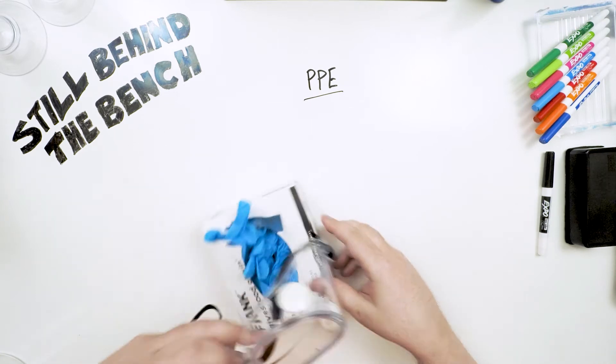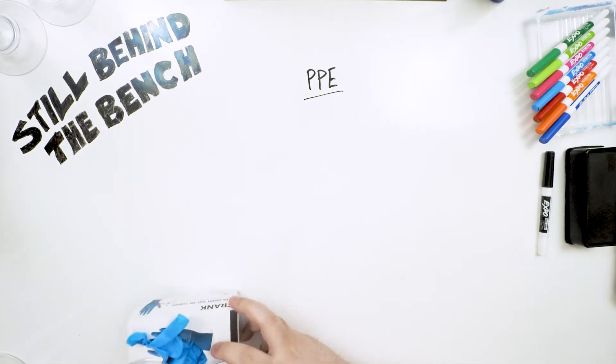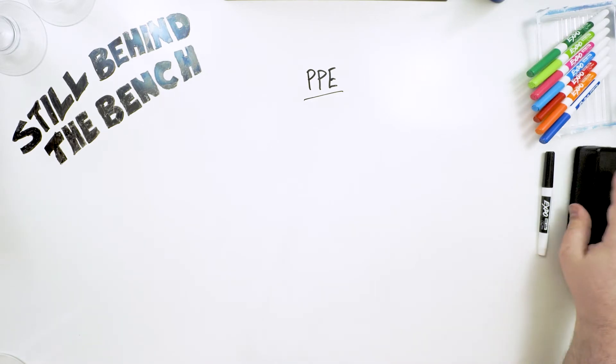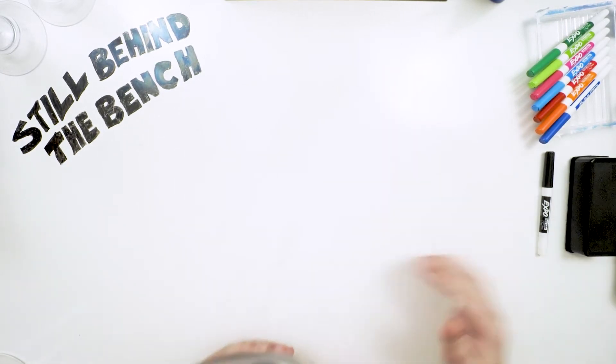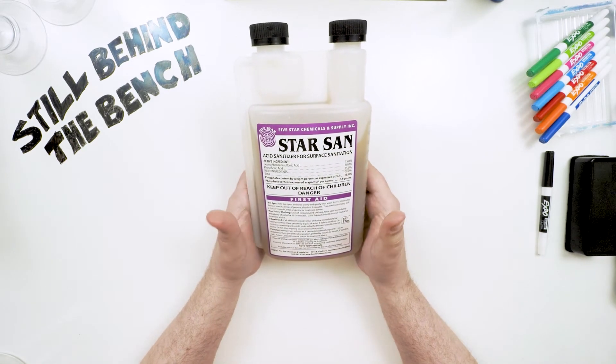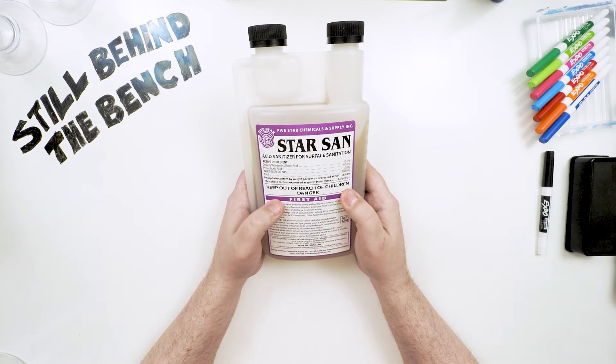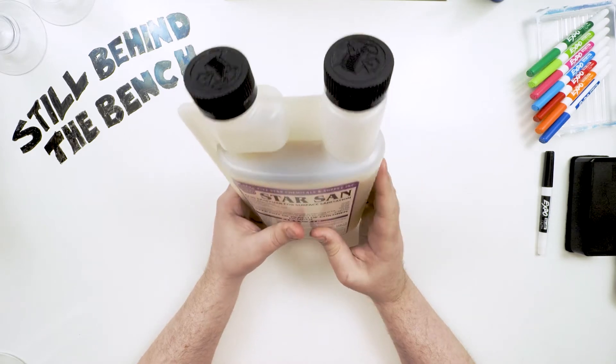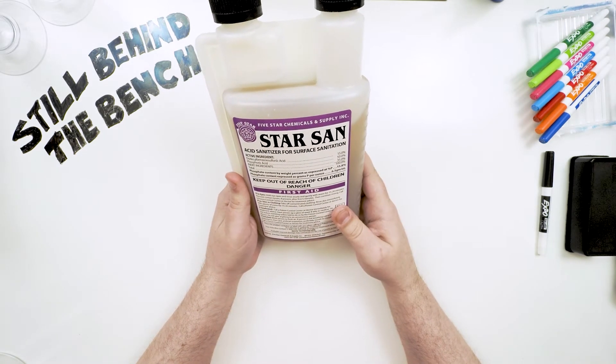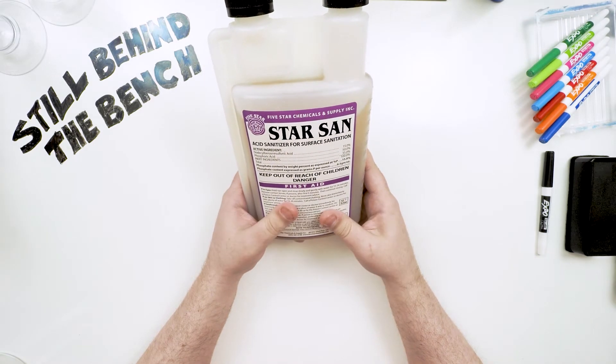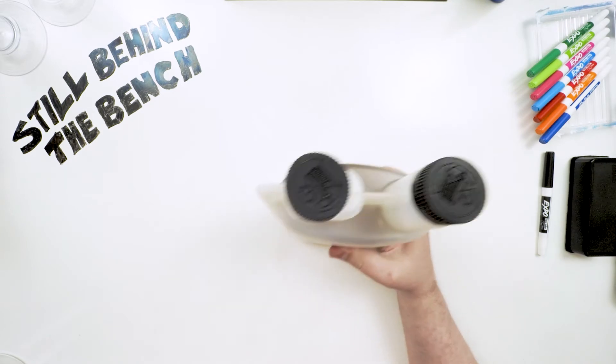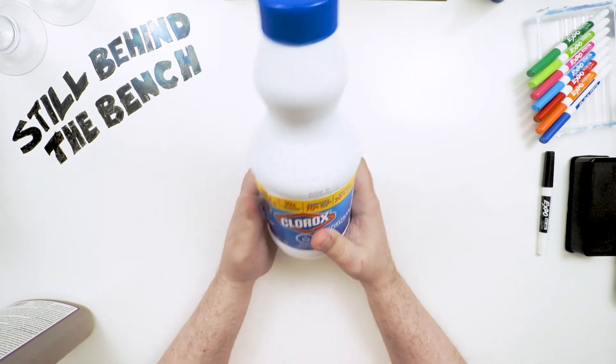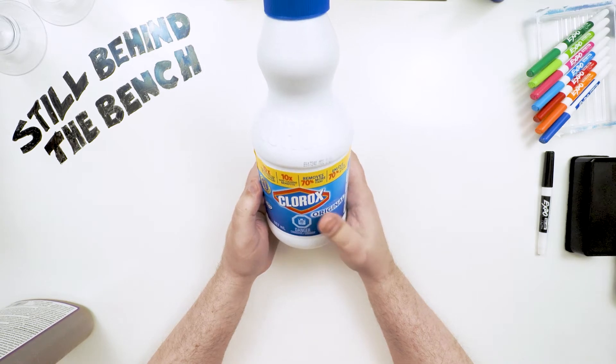The reason we use all this PPE is because there are a lot of dangerous chemicals that not handled properly can seriously hurt you. One of those is the extremely popular sanitizer StarSan. This is an acid-based sanitizer. It's 50% phosphoric acid as it comes in the bottle. It can burn your skin and I don't even want to know what happens if it gets into your eye.